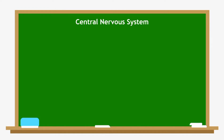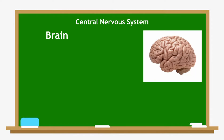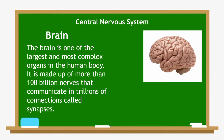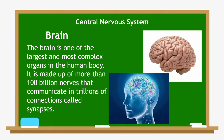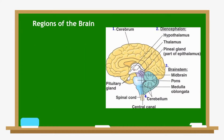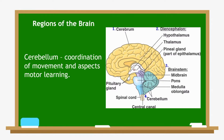Now, we will start with the central nervous system, beginning with the brain. The brain is one of the largest and most complex organs in the human body. It is made up of more than 100 billion nerves that communicate in trillions of connections called synapses. The first region is the cerebellum, which coordinates movement and aspects of motor learning.